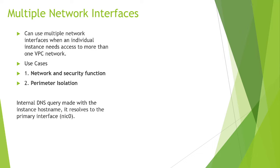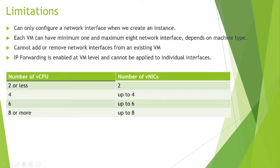There are some limitations. You can only configure a network interface when you create an instance — you cannot add interfaces to an existing instance. Each VM has a minimum of one interface, but you can increase up to eight network interfaces. However, this depends on the machine type: if you have two or fewer CPUs, you can only add two network interfaces; with four CPUs, you can add up to four.